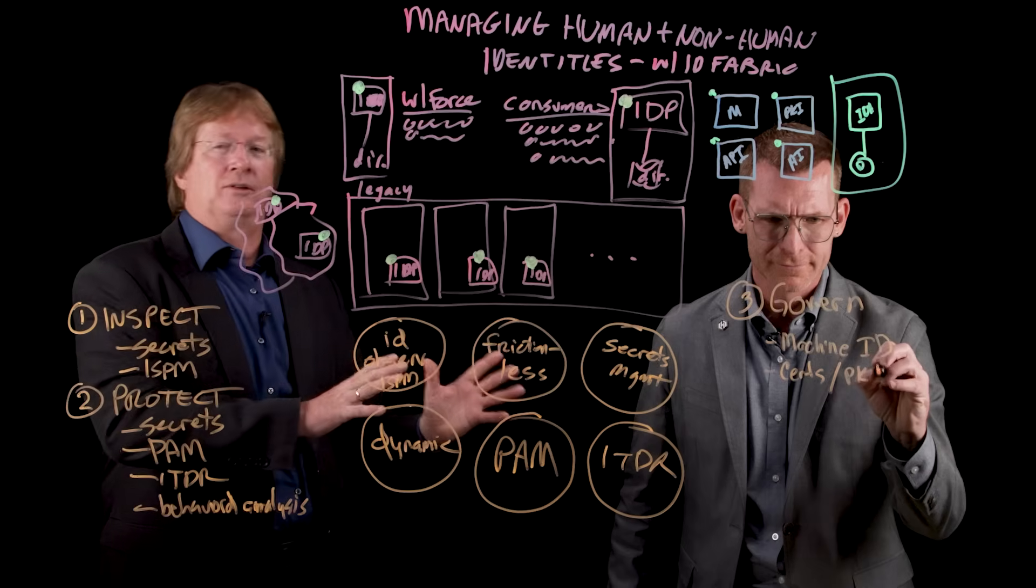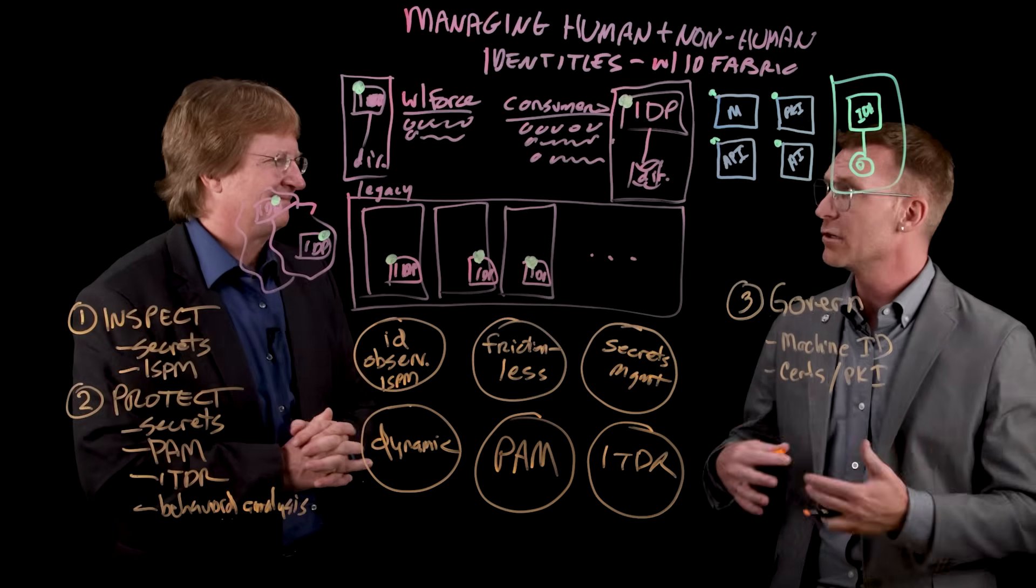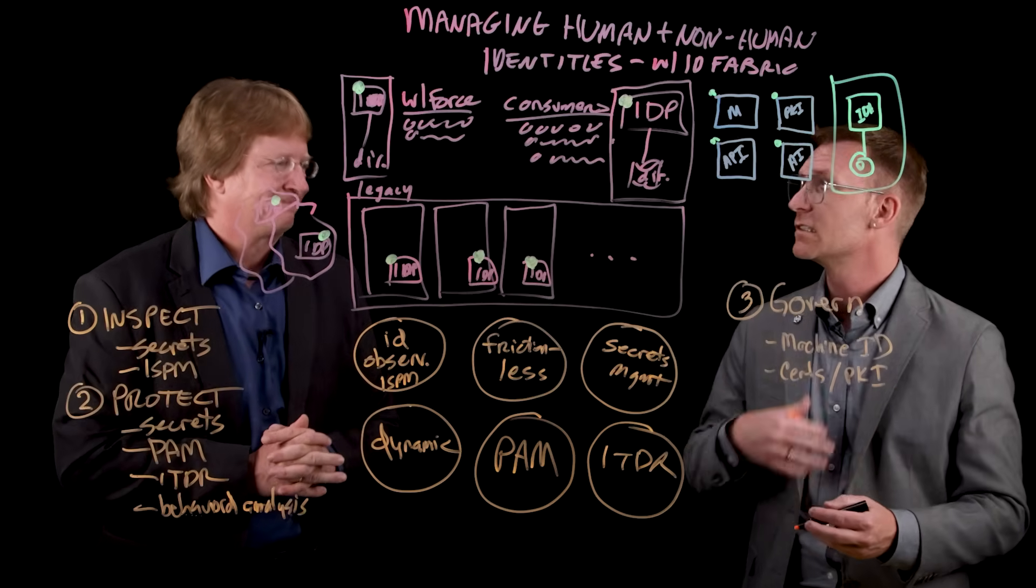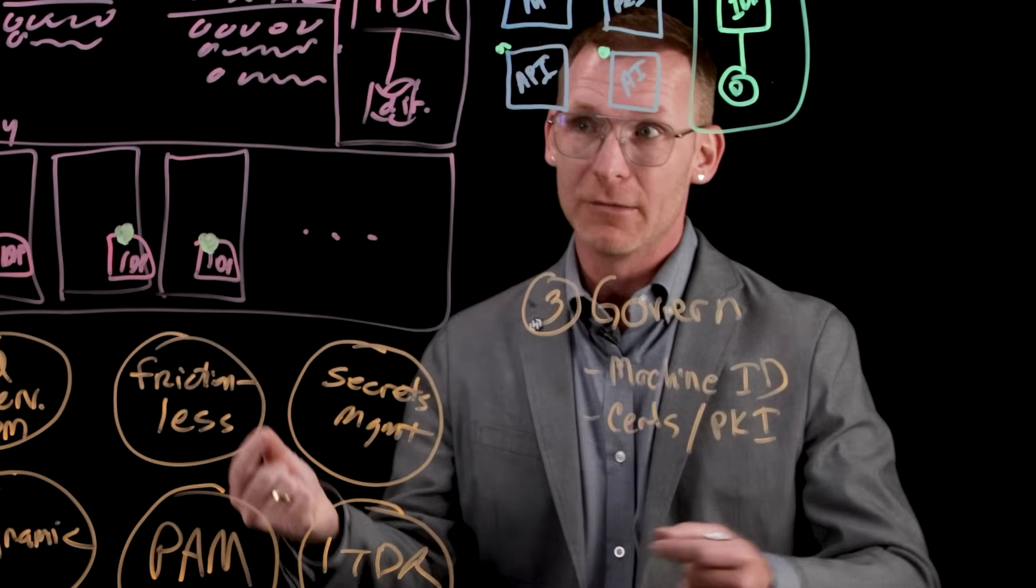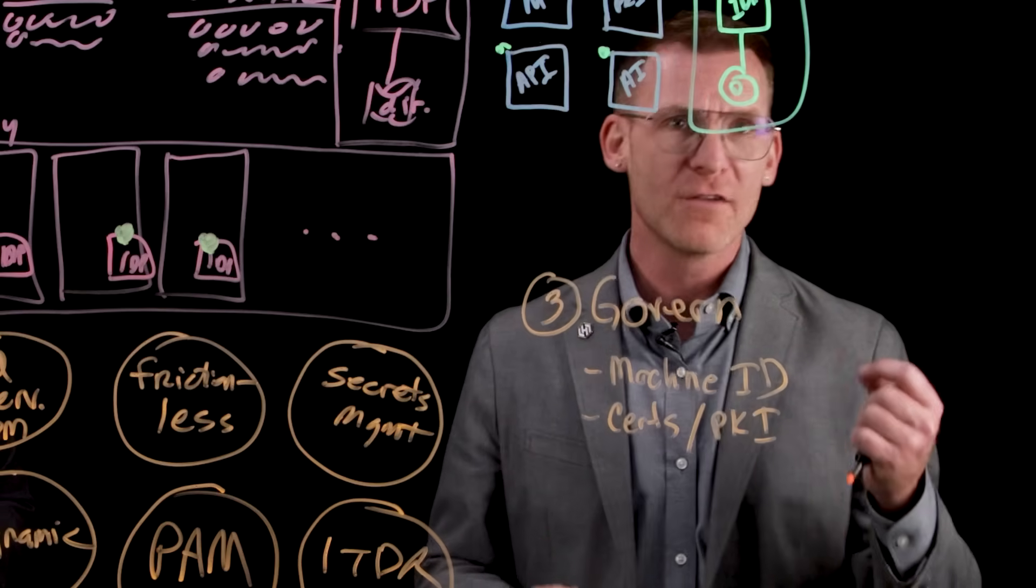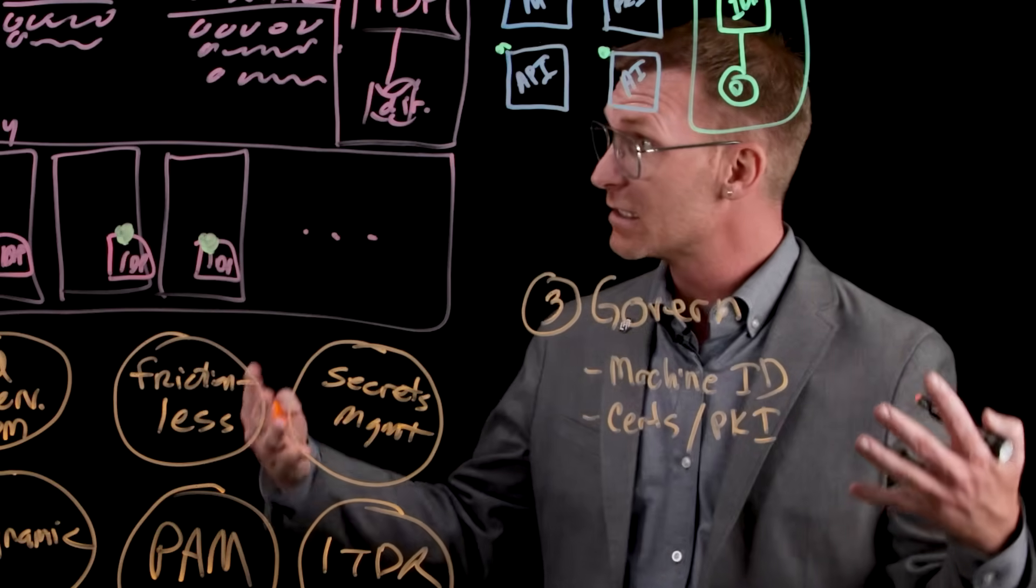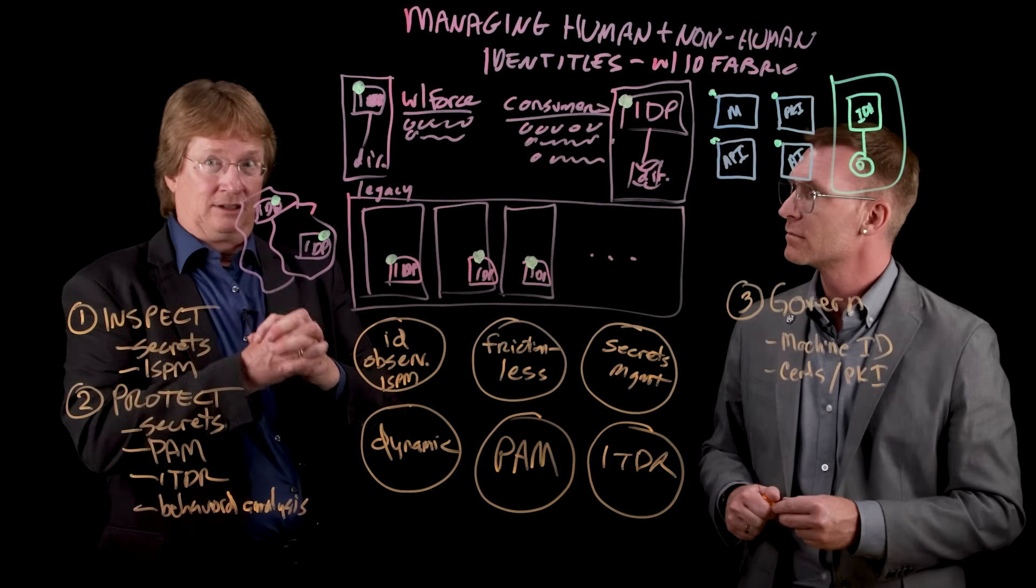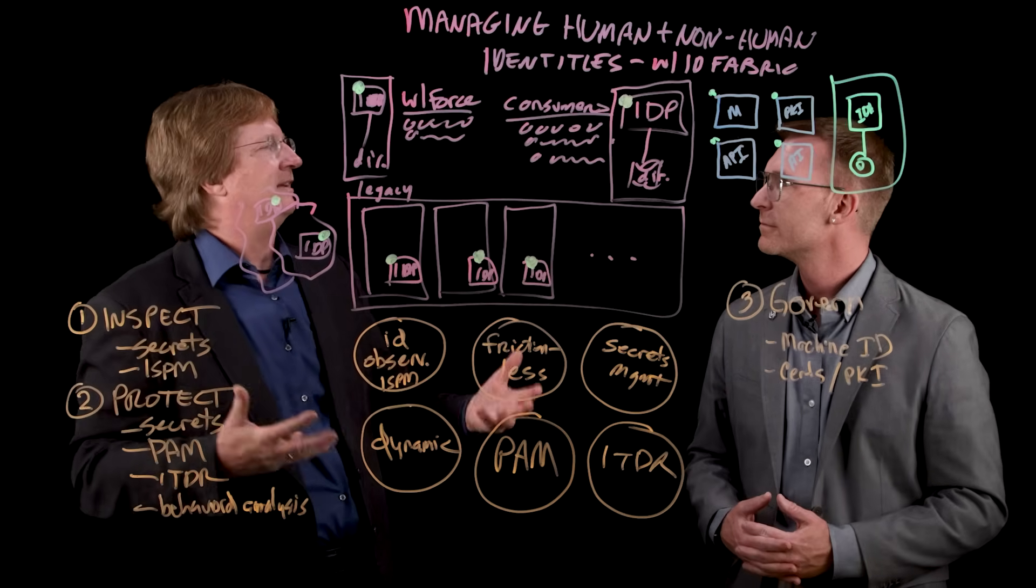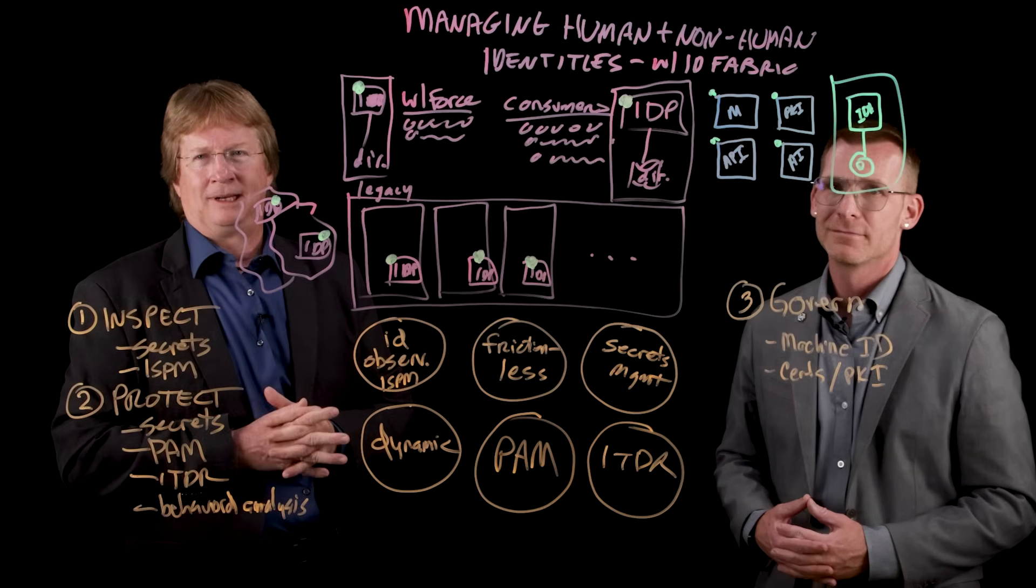That leads us then to the final step of the process, which is governing. Governing is governing the lifecycle of our secrets and of our identities, machine identities and human identities. Really considering the full lifecycle and all the workflows that are involved: employee onboarding, employee offboarding, principal onboarding, principal offboarding, revocation, denial. It is a full lifecycle and we need to treat it as such and treat them as consistent workflows for human and non-human identity. Govern brings the consistency, protection brings the protection, and inspect helps us find those hidden things that we couldn't see. That's what we're going to talk about in this series around managing human and non-human identities through an identity fabric. Thank you for your time. Thanks for joining us.